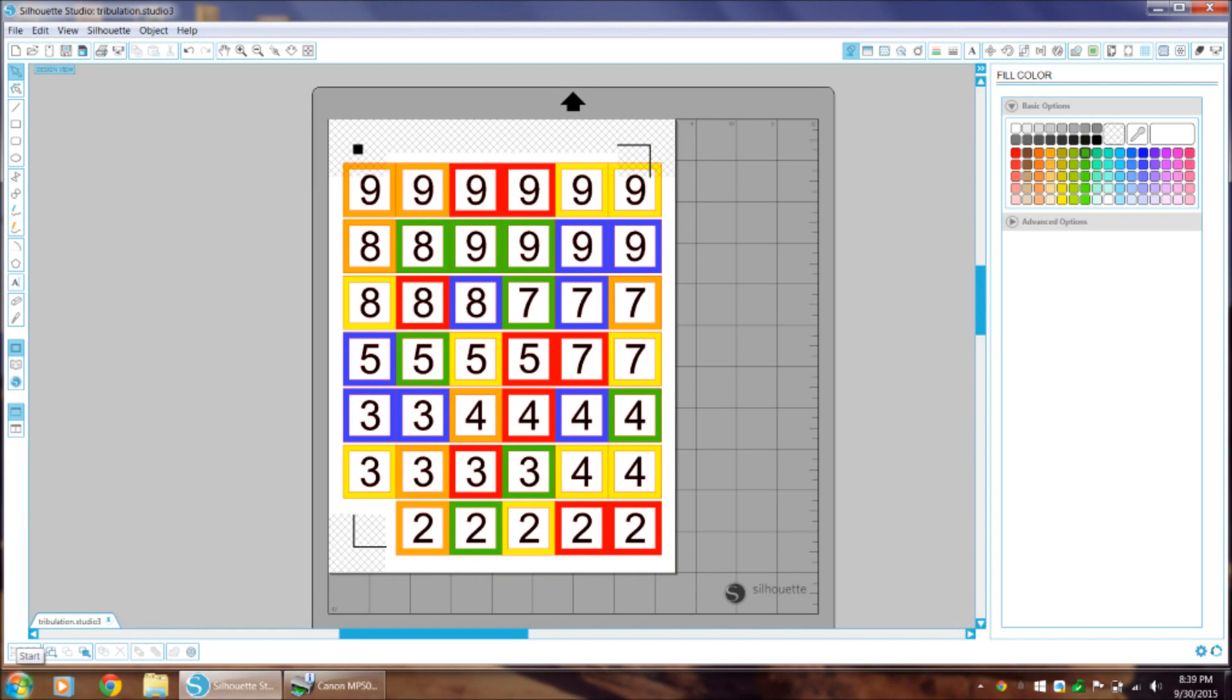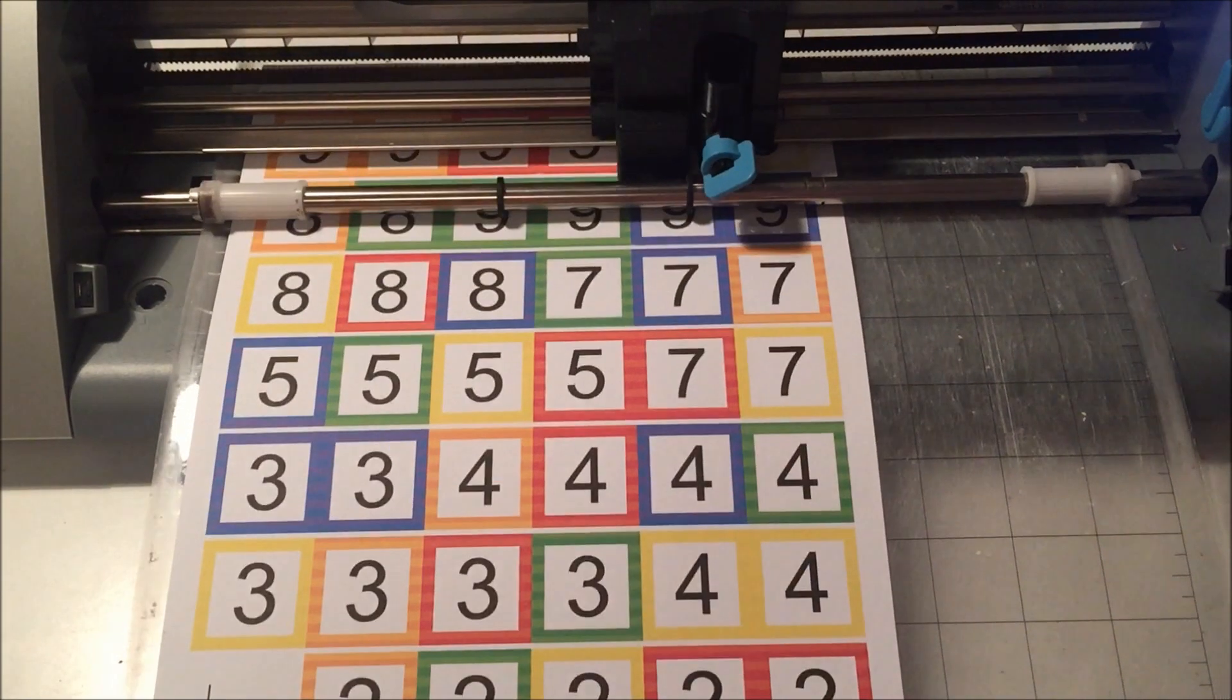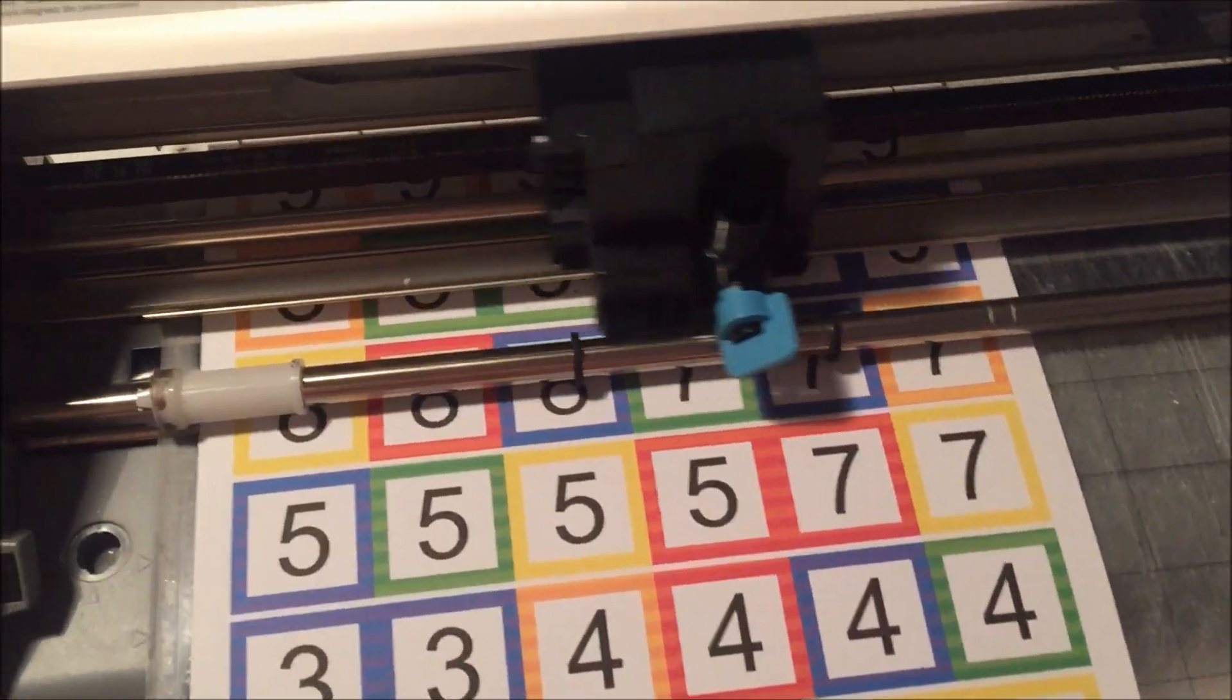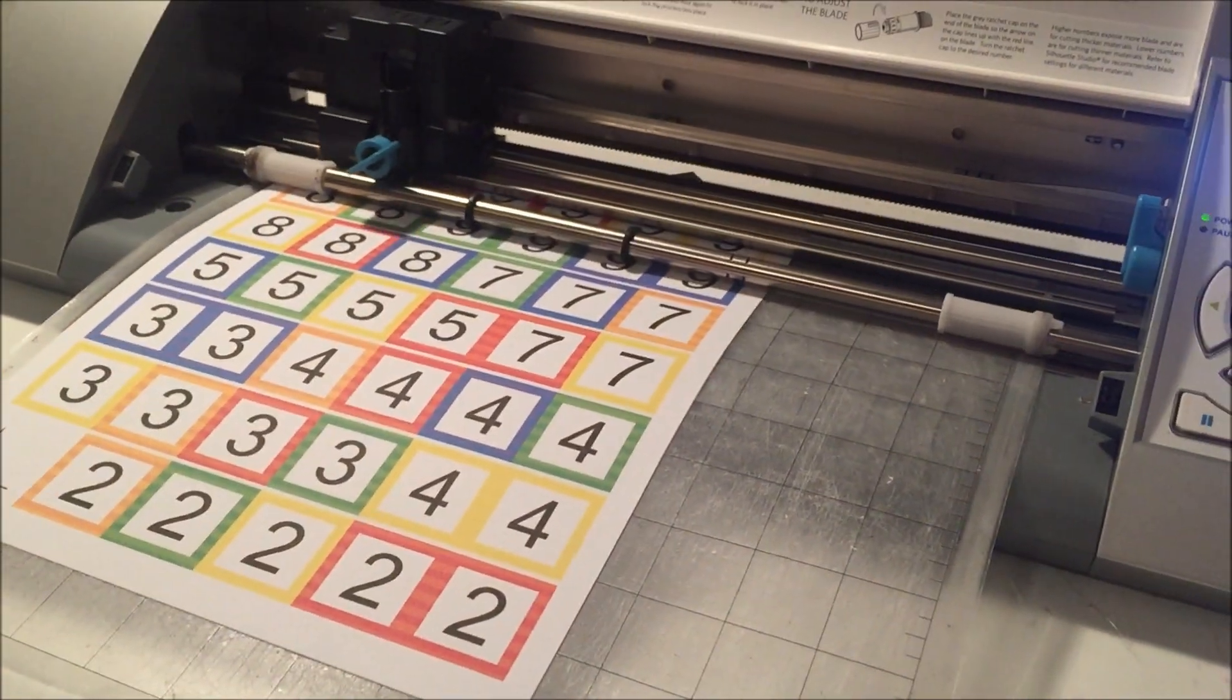So now I want to show you how to make this game on your own. And I am using my Silhouette Cameo program for this, but you could just print this out on a regular sheet of paper, and then just use a paper trimmer and just cut out little squares.